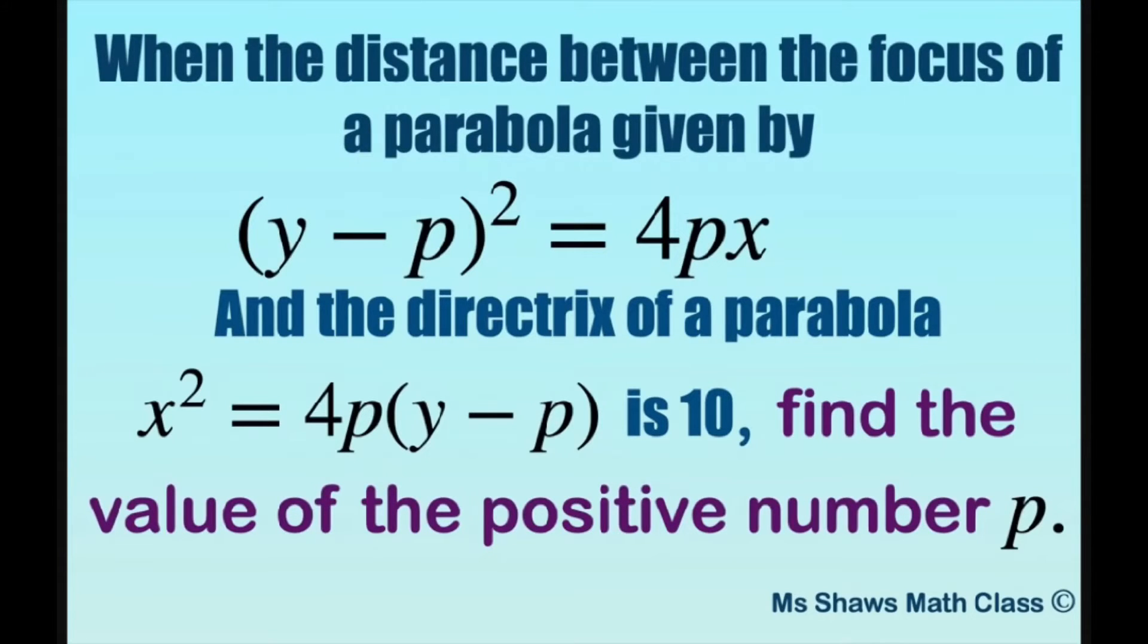Hi everyone! When the distance between the focus of a parabola given by (y-p)² = 4px and the directrix of a parabola x² = 4p(y-p) is 10, we're going to find the value of the positive number p.